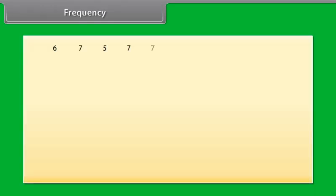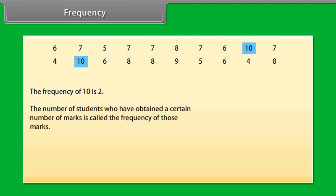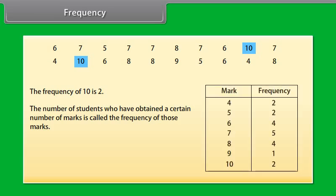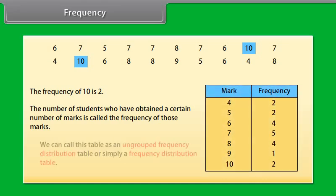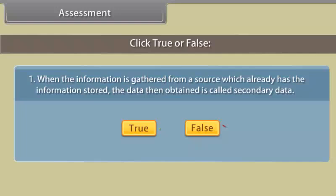Frequency: Look at these numbers - these are the marks obtained by 20 students in subject science. We can see that 2 students have scored 10 marks, so the frequency of 10 is 2. The number of students who have obtained a certain number of marks is called the frequency of those marks. We can write this data in a table form called an ungrouped frequency distribution table or simply a distribution table.